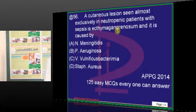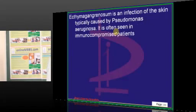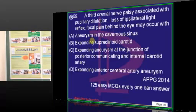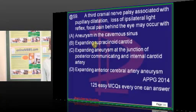In neutropenic patients, you commonly see ecthyma gangrenosum, and ecthyma gangrenosum is caused by Pseudomonas. This is a very well-known question that has been discussed many times.